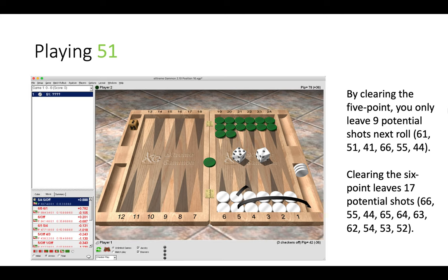Okay, so let's start with 5-1. Now the 5-1 play is pretty clear. You must clear the 5-point, and anything else would be a blunder as we see in red. Now the 5-point is correct, clearing the 5-point because you only leave 9 potential shots next roll. Of course green could dance. Green is not the favorite to enter on a 5-point board. He only enters 11 rolls out of 36.